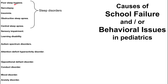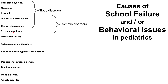First we have sleep disorders: poor sleep hygiene, narcolepsy, insomnia, obstructive sleep apnea, and central sleep apnea. A few are somatic disorders — actual structural problems, such as obstructive sleep apnea and sensory impairment, where you might have vision or hearing loss. We have developmental disorders like learning disabilities, including intellectual disability, and autism spectrum disorders.